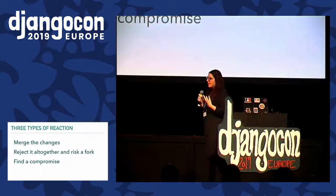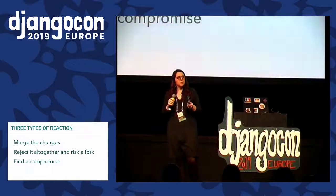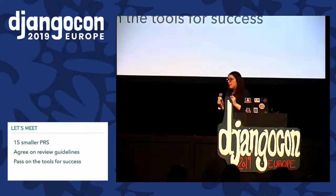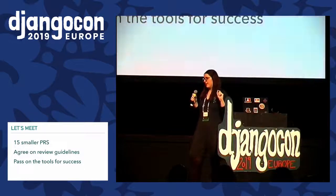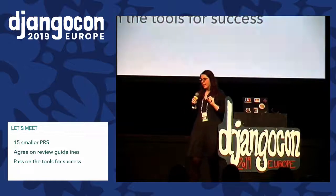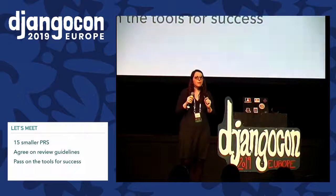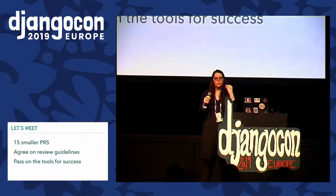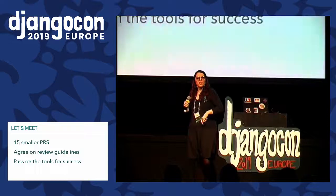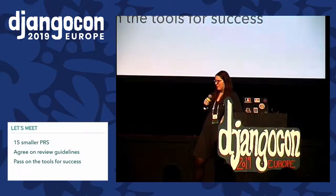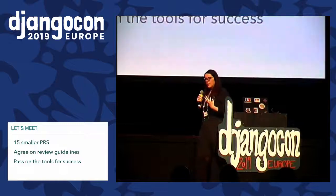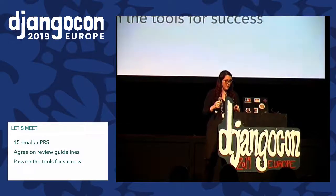So we met for half a day and talked. We talked about their context, about what they could give in and what we could give in so that we could move forward together. In the end, we agreed on 15 smaller PRs that would amount to the 200,000 lines of code. We agreed on review guidelines — which part of PEP 8 we would apply, which part of testing we would apply. And especially the most important point: they needed the tools to succeed. Telling someone 'just do cherry pick and then rebase and I'll come back in a few days' doesn't fly — you need to be with people and hold their hands at first so that they know how to do this, and then they can teach others.